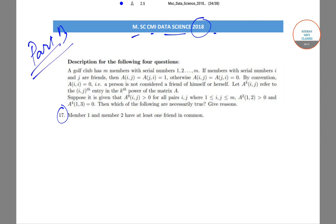In this question, the description has been given that a golf club has M members with serial numbers 1 to M. If members with serial numbers I and J are friends, then A(I,J) equals A(J,I) and both equal 1. Otherwise, A(I,J) equals A(J,I) and that equals 0. By convention, A(I,I) equals 0.